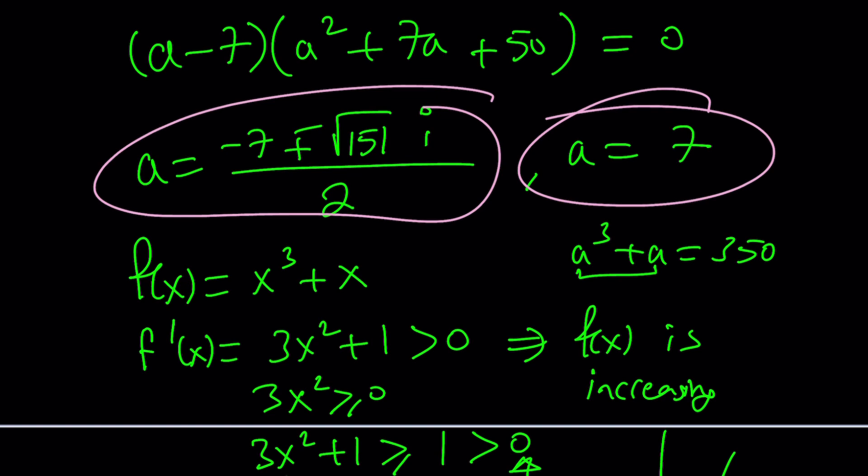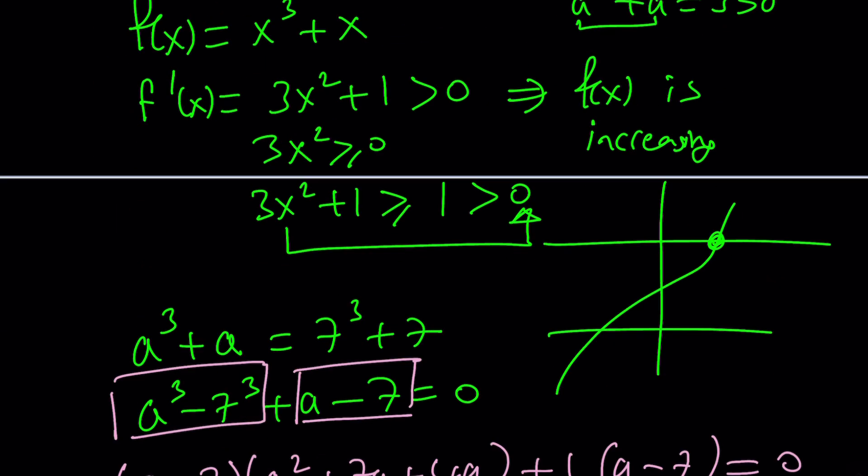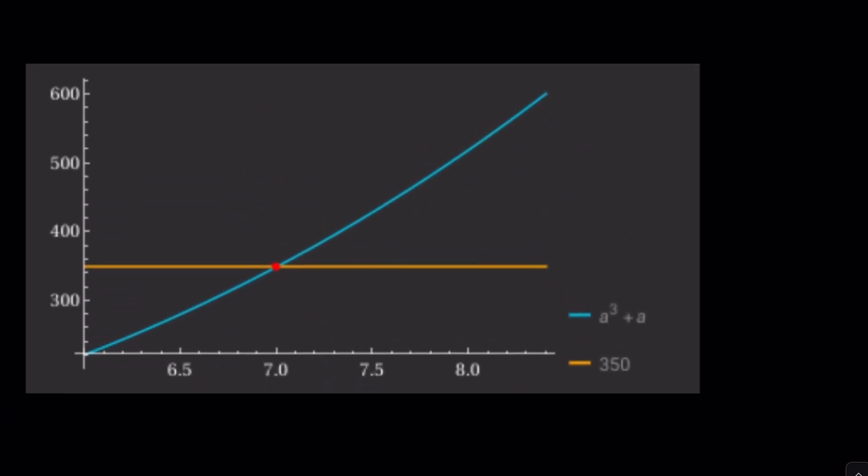Again, we use factoring to find out. You could use the rational root theorem, but good luck with that because 350 has a lot of factors. Now here's the graph I was talking about.